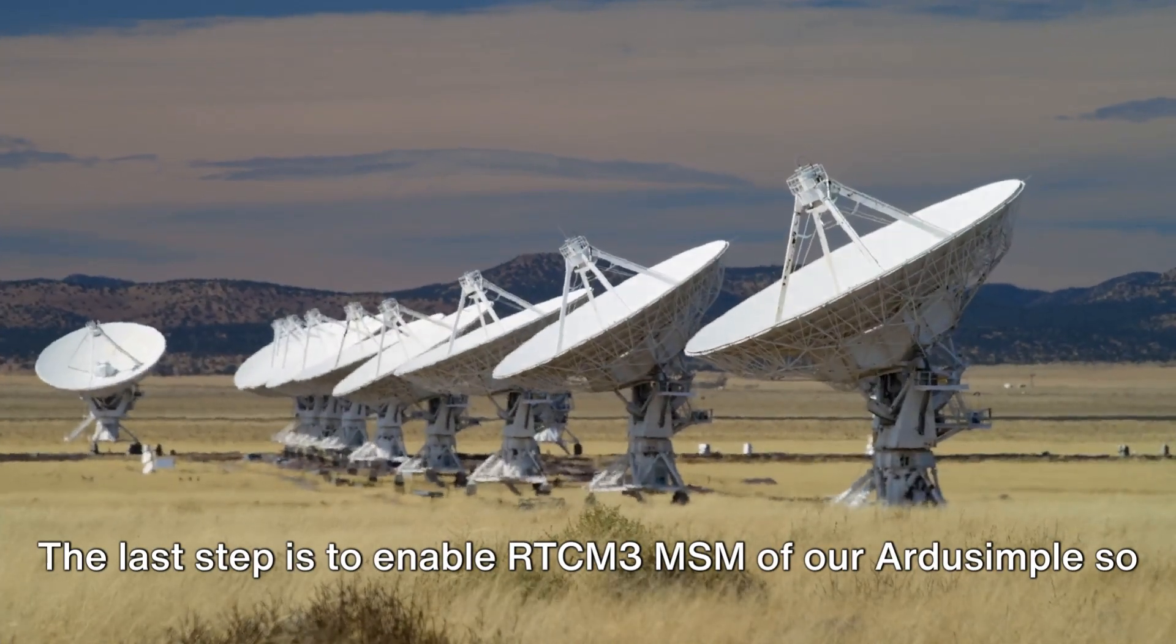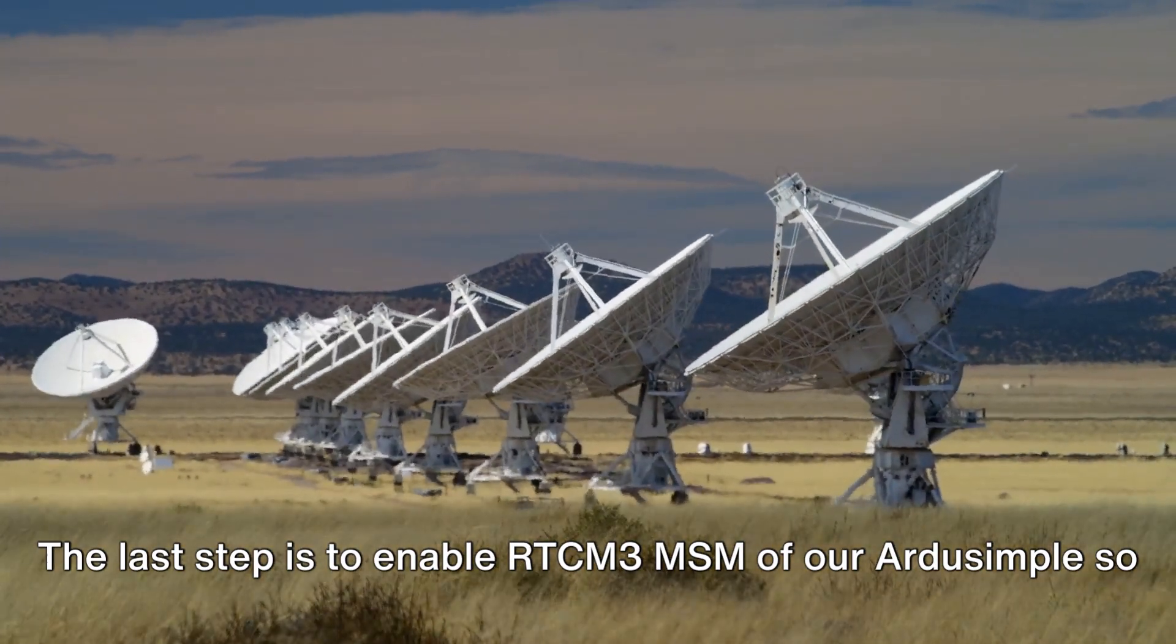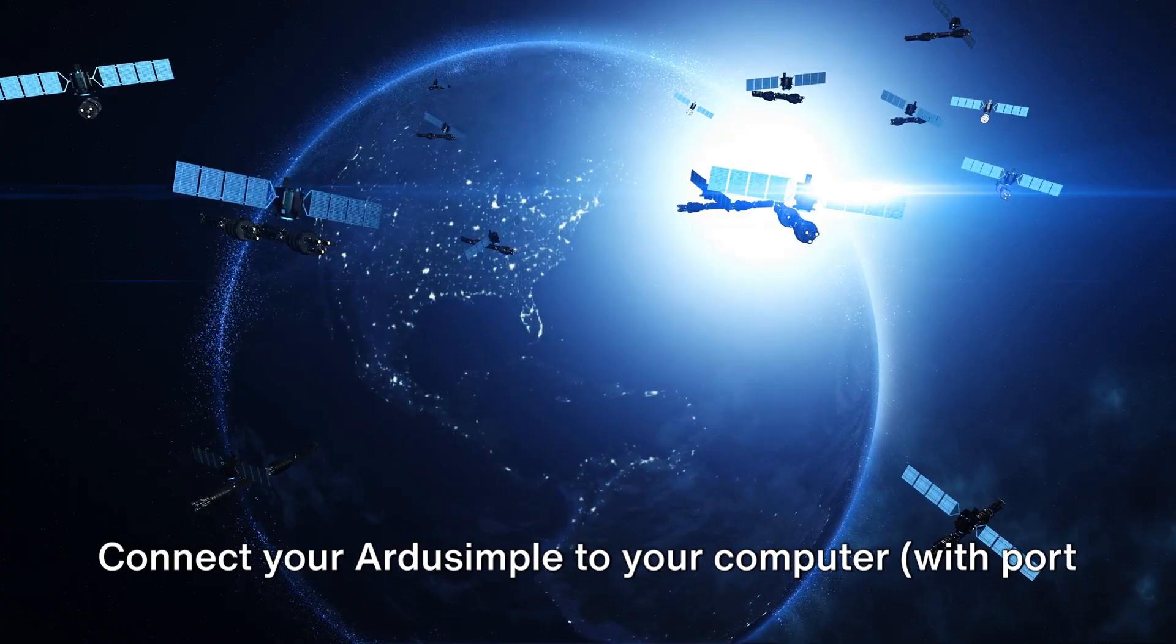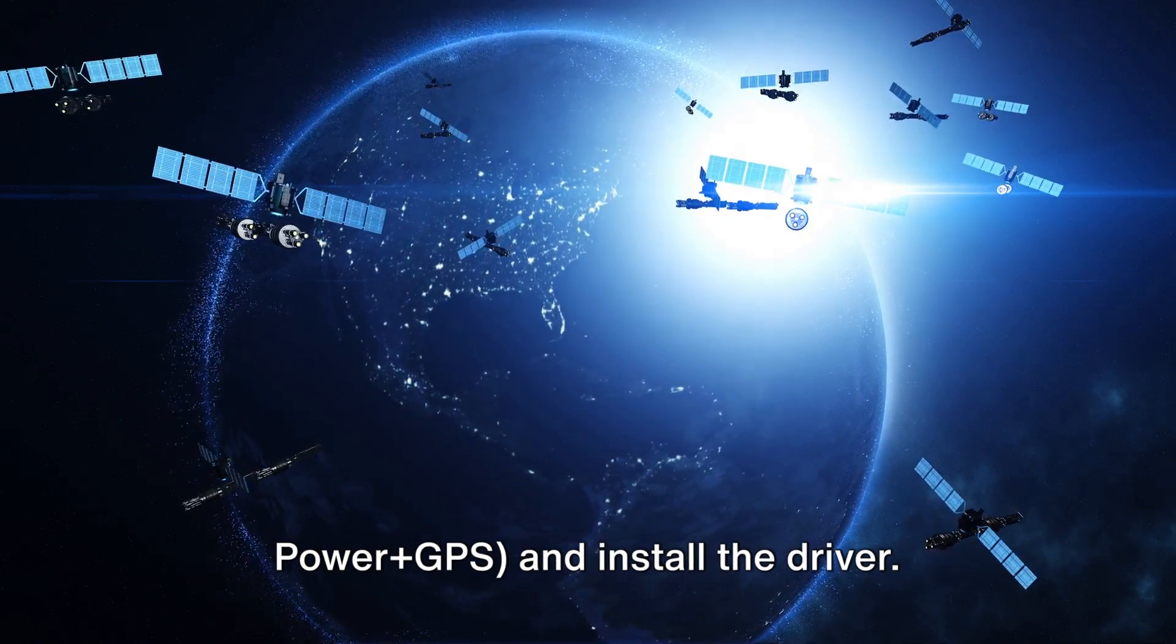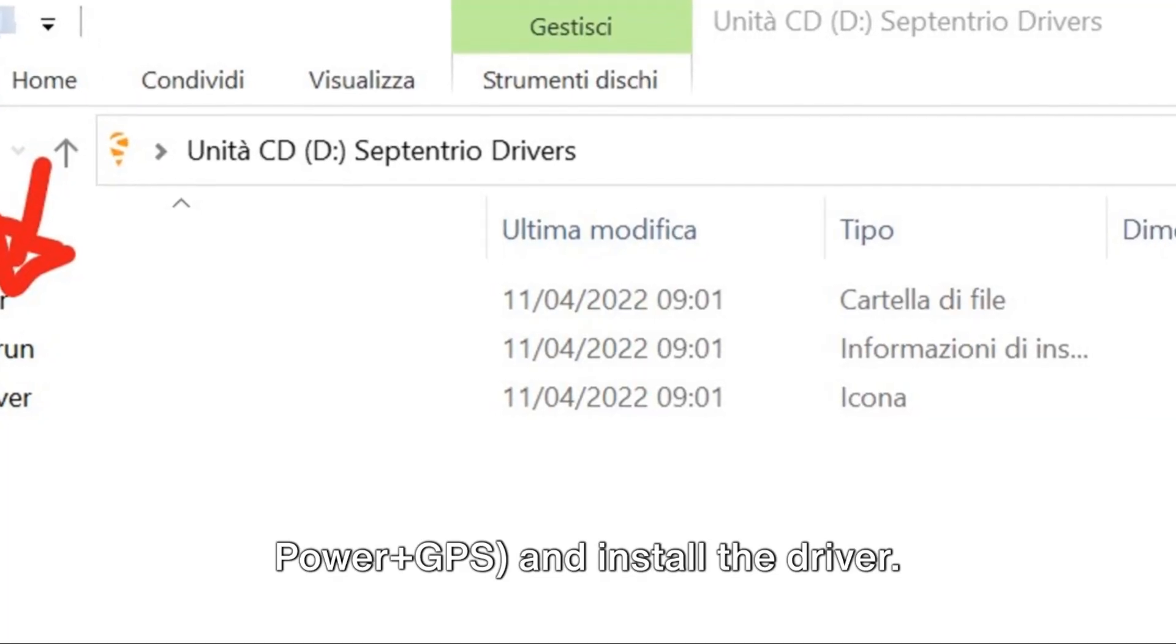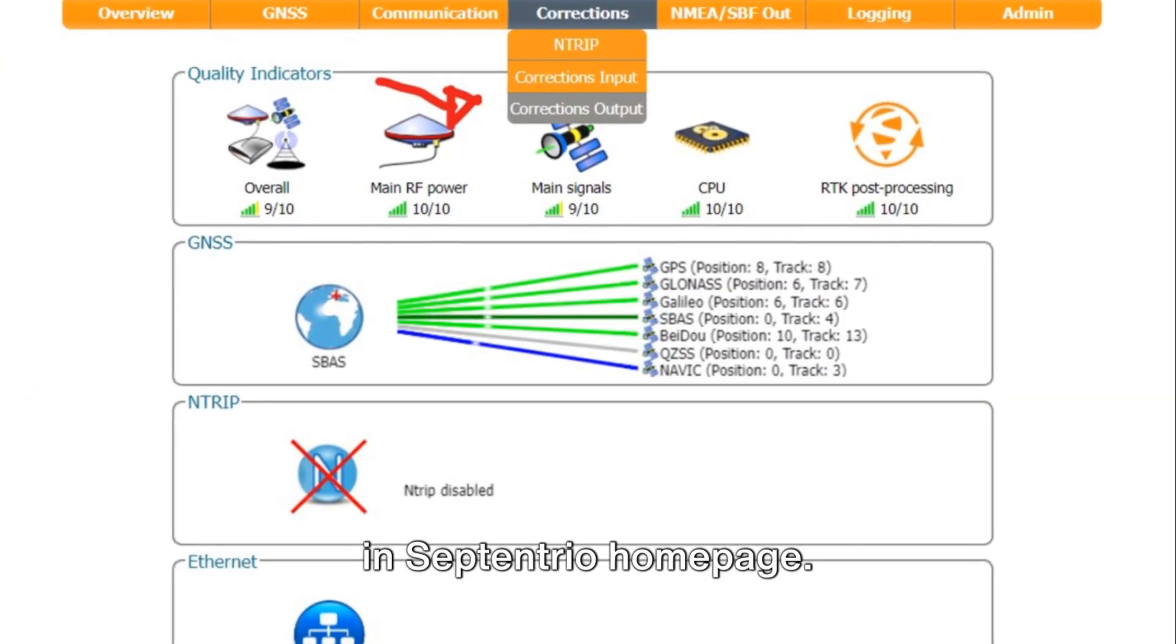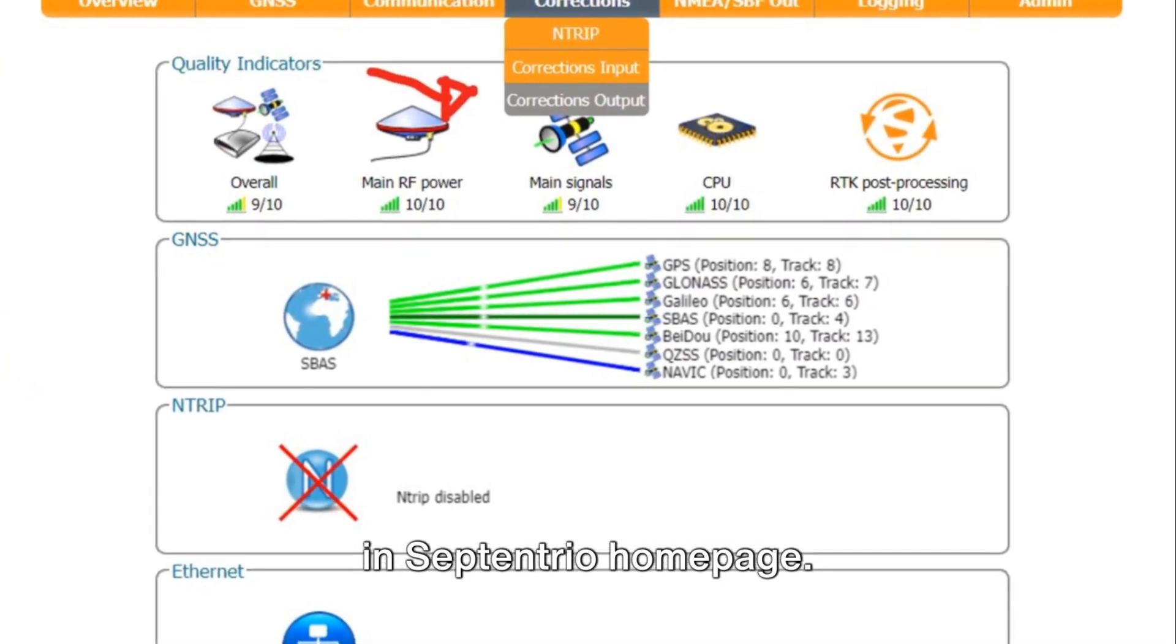The last step is to enable RTCM 3MSM on your ArduSimple so that it doesn't go offline on the Onokoi console. Connect your ArduSimple to your computer with PortPower plus GPS and install the driver. After installation, go to 192.168.3.1 in the Septentrio homepage.